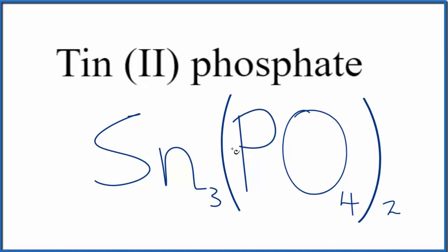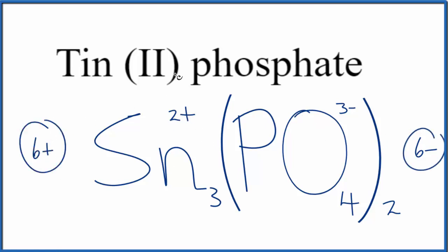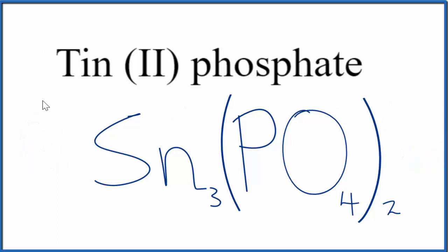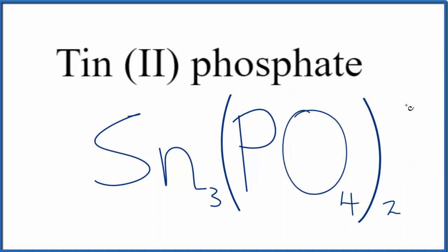If we wanted to check our work — remember that each tin is 2+ and each phosphate is 3 minus. Two phosphates at 3 minus gives us 6 minus; three tins at 2 plus gives us 6 plus. So the charges are balanced out. We have a net charge of zero, and this is the correct chemical formula for tin(II) phosphate.